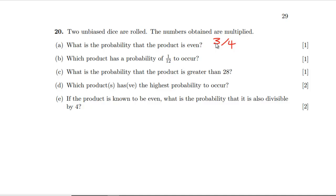Which product has a probability of one in twelve to occur? The total number of permutations is 36, so we want three out of 36. We need a number that can be made in three different ways, so it has to be a perfect square. One times four, four times one, two times two — so four looks good.